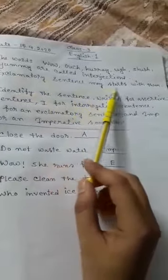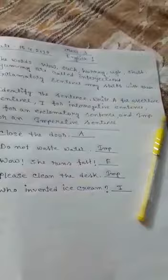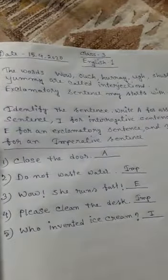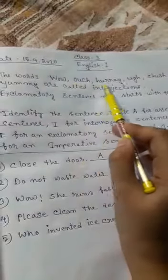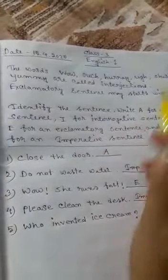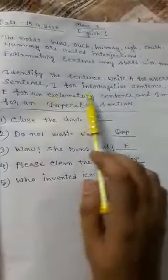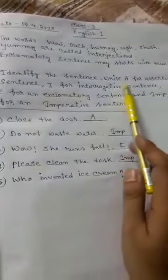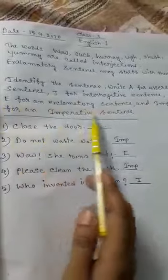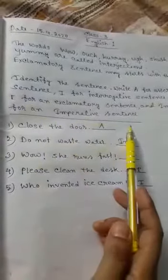Exclamatory sentences may start with these interjections. Now identify the sentence types. Here are some sentences. You have to write A for assertive sentence, I for interrogative sentence, E for exclamatory sentence, and Imp for imperative sentence.